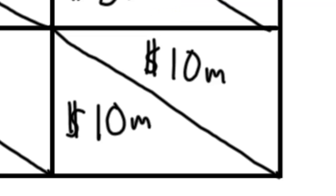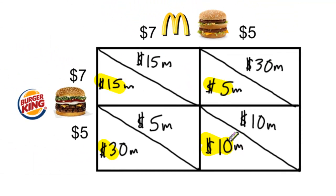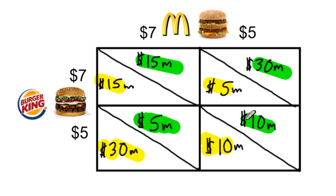Now we have our complete payoff matrix. The yellow payoffs represent Burger King's profits based on the pricing decisions of both Burger King and McDonald's. The green numbers represent McDonald's possible payoffs, which are dependent upon the pricing decision not just of McDonald's itself but also its competitor Burger King. This is why this is called a payoff matrix — a table showing all the various payoffs based on the price decided by the two primary competitors in an oligopolistic market.